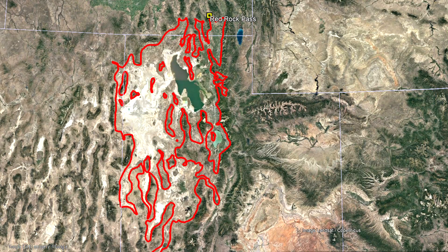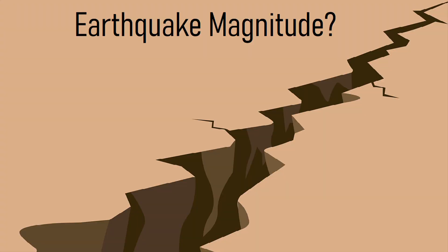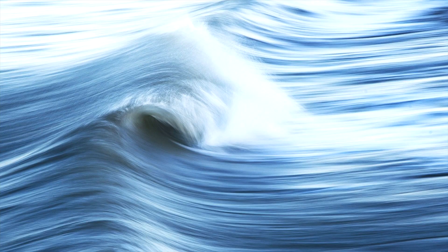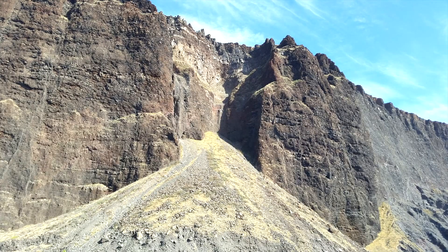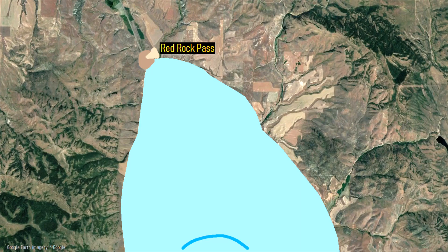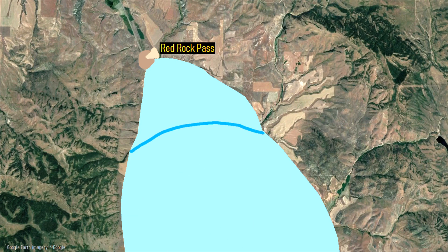Then, 17,400 years ago, the lengthy Wasatch Fault produced a major earthquake. The exact magnitude of this quake was unclear, but it was likely in the high magnitude 6 or low magnitude 7 range. This quake rapidly uplifted a large section of water within the lake, and alongside numerous landslides created a towering tsunami. When the tsunami reached the far northern edge of the lake at Red Rock Pass, it caused the earthen dam to completely collapse.